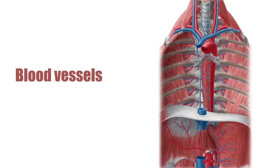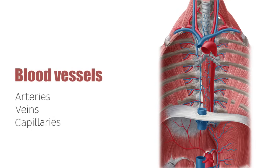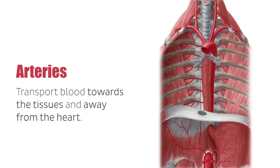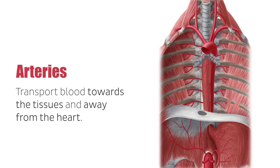There are three major classes of blood vessels, namely arteries, veins, and capillaries, and they are categorized according to their histological structure. Arteries transport blood between the tissues and away from the heart, and have thick muscular walls with small internal lumina or passageways that can withstand blood under high pressure.